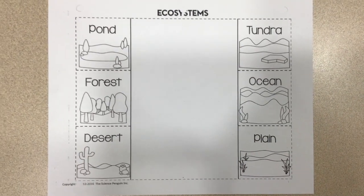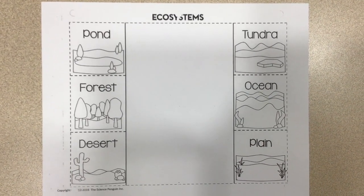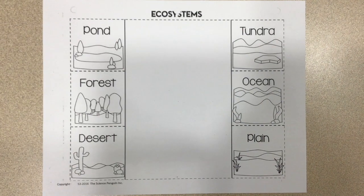All right guys, so today you're going to be getting a paper that looks like this. You can see it's got six ecosystems on it: pond, forest, desert, tundra, ocean, and plain.